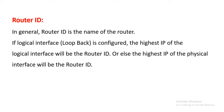Router ID is generally the name of the router and the OSPF function depends on it. If a loopback IP is configured on the router, it is considered the router ID. If there are multiple loopbacks, the highest loopback IP is considered as the router ID. If no loopback is configured, the highest IP among the physical interface IPs will be considered as the router ID.